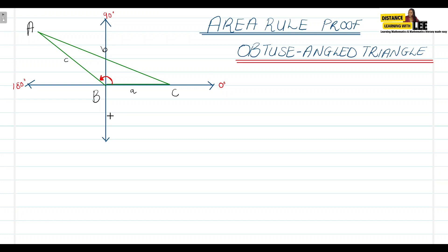The same as when we deal with an acute angle triangle — if you have to determine the area of any triangle, we know the area of a triangle is half base times perpendicular height. So that is going to be our starting point for proving the area rule.